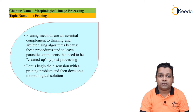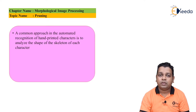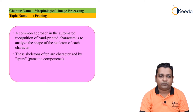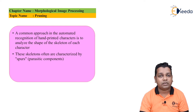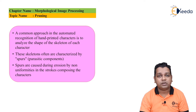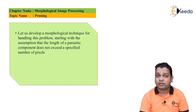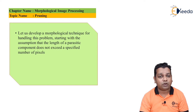We are developing a morphological solution to the pruning problem. One common approach in the automated recognition of hand-printed characters is to analyze the shape of the skeleton of each character — whether it is capital A, capital B, and so on. These skeletons are often characterized by certain spurs, which are parasitic components caused during the erosion process due to non-uniformities in the strokes composing the characters. We assume that the length of the parasitic component does not exceed a specified number of pixels.